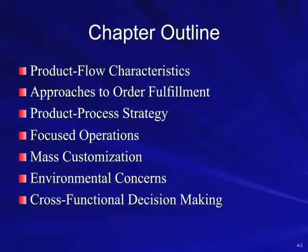In this chapter, we're going to look at the flow of a product or the service that we're providing. We're going to consider what needs to be done to fulfill an order and translate that into the process that we use. Then we'll look at how we need to focus our operation across different situations, whether we have to mass produce or even mass customize — those are two different terms — look at environmental issues, and come back to the cross-functionality of whatever we do.